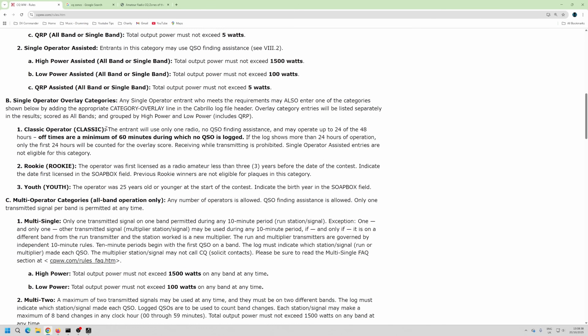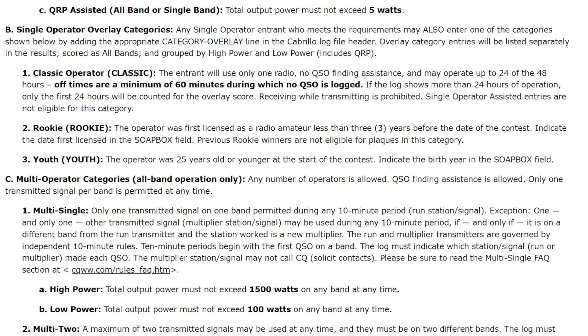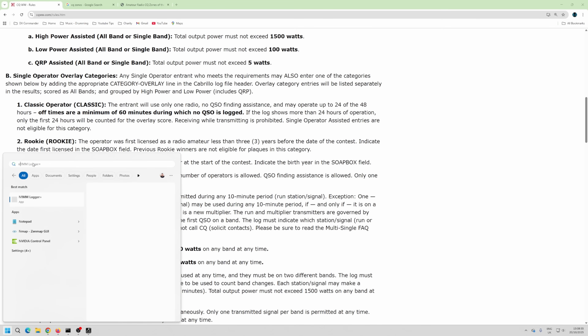There's also an overlay category. If you only did 24 of the 48 hours, you can enter the classic overlay. For example: CQ Worldwide, single operator, low power, with a classic overlay — meaning I only did 24 of the 48 hours. Right, now I'm going to fire up N1MM.